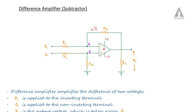In this lecture we are going to discuss the difference amplifier, or we can simply call it a subtractor. Here you can see we are having two input voltages V1 and V2. V1 is connected to the inverting terminal of the operational amplifier and V2 is connected to the non-inverting terminal. V0 is the output voltage which is taken across the load resistor RL.